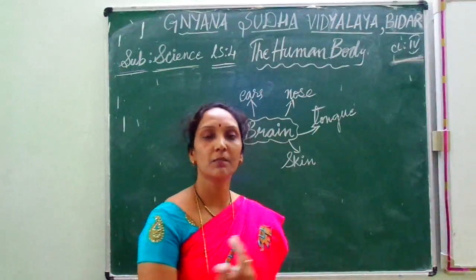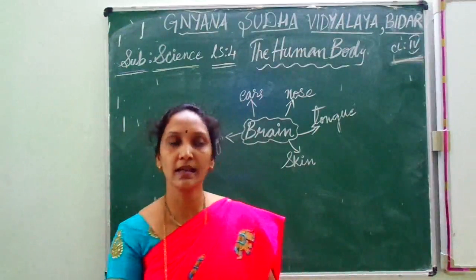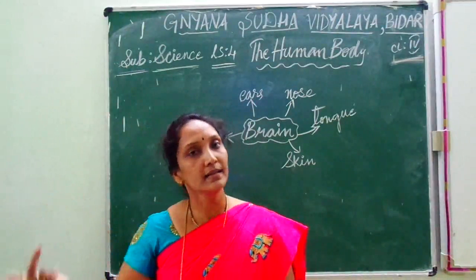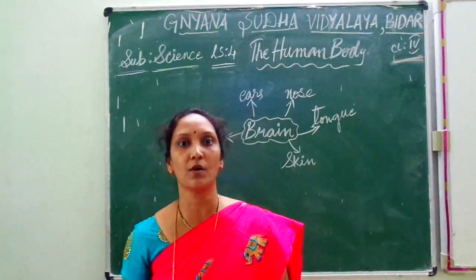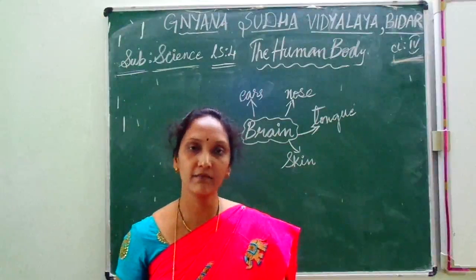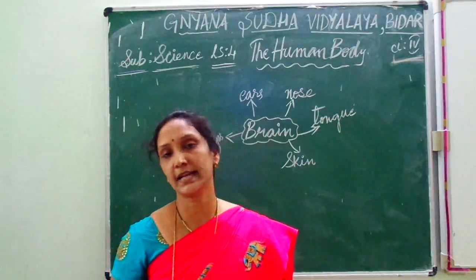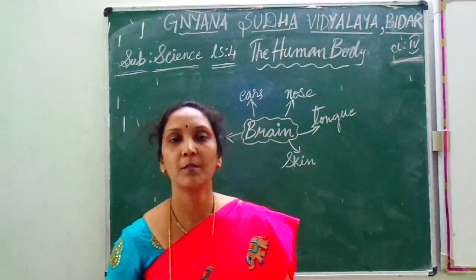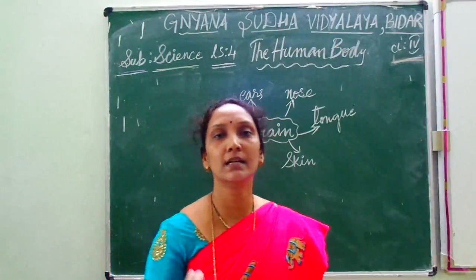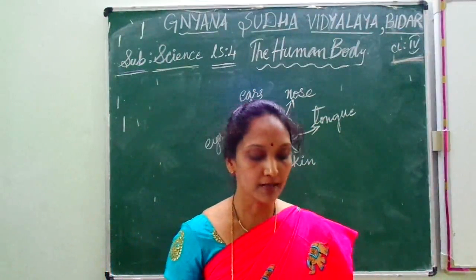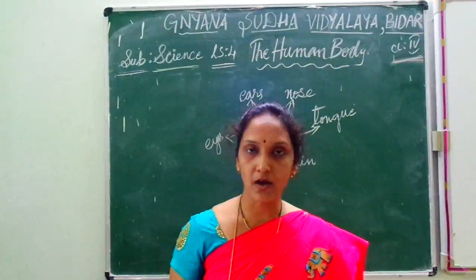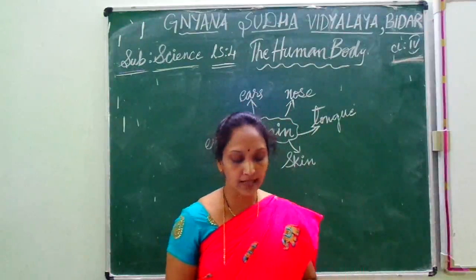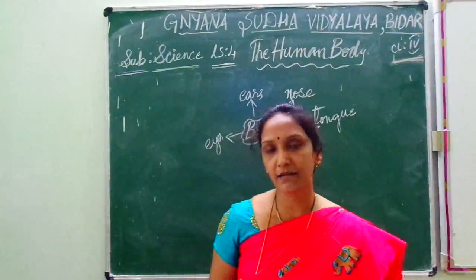When we talk about the animals, then it is animal body. When we talk about a plant, then it is a plant body. The same way, here in this 4th lesson we will be seeing the human body — what is this all about. The human body is like a machine.